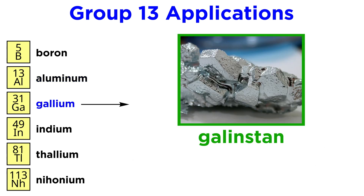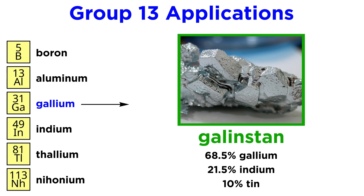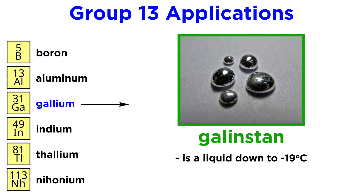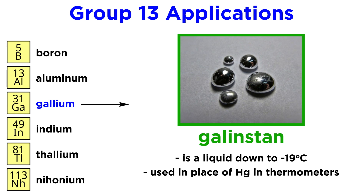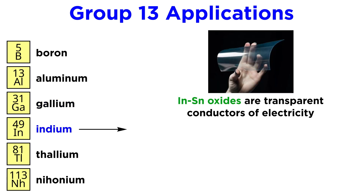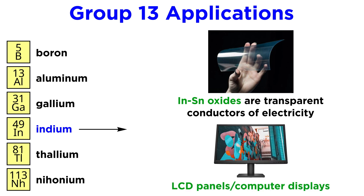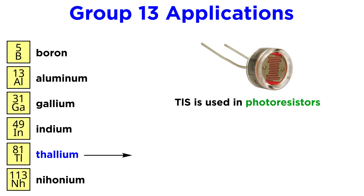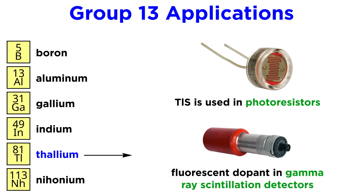Gallium has utility in the alloy gallinstan — 68.5% gallium, 21.5% indium, and 10% tin. This alloy is a liquid all the way down to negative 19 degrees Celsius, and is often used in place of mercury in thermometers. Gallium is also used in semiconductors and LED lights. Indium has utility in indium tin oxides, which are transparent conductors of electricity used in LCD panels and computer displays. Thallium sulfide is used in photoresistors, as this material changes its conductivity when exposed to light. Thallium is also used as a fluorescent dopant in gamma ray scintillation detectors.